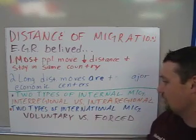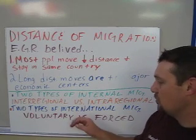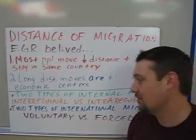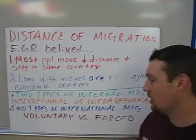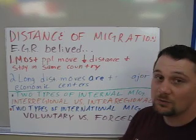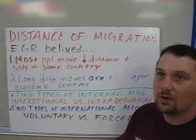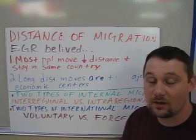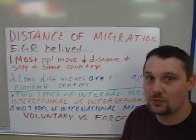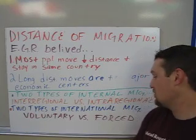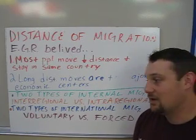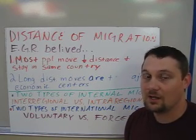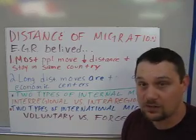Then we have international migration, which is moving from one country to another. There are two types of international migration. One is voluntary, which is usually driven by pull factors — though it could involve push factors too if someone is choosing to leave because of war or a bad government. Voluntary simply means that people choose to move to another country. Then there is forced migration internationally, which means you are forced to move to another country — and those are always push factors.